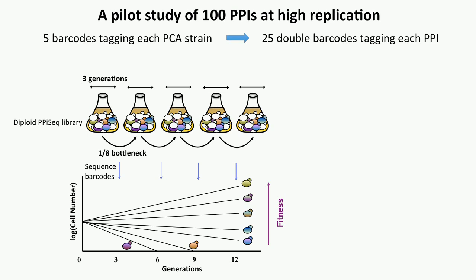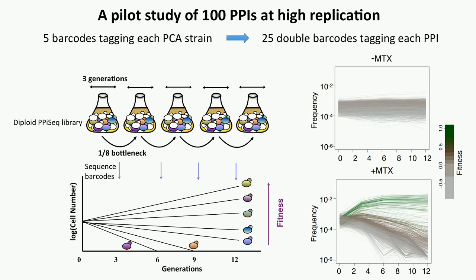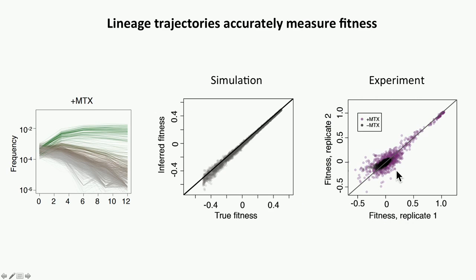Here is the cartoon data and here is the real data. Without methotrexate, all cell lineages have similar fitness, so the frequency over time is flat. But with methotrexate, we see a large number of double barcode frequencies increase, while some decrease. Based on this data, we developed a model using the maximum likelihood method to measure fitness for each lineage. Simulations and experiments both show very high accuracy for measuring fitness and very high reproducibility across two replicates.